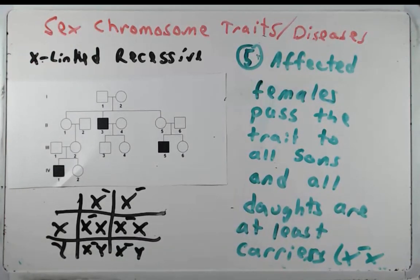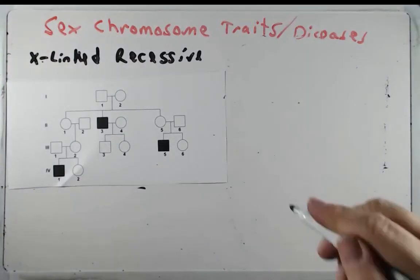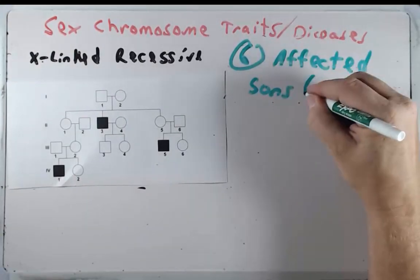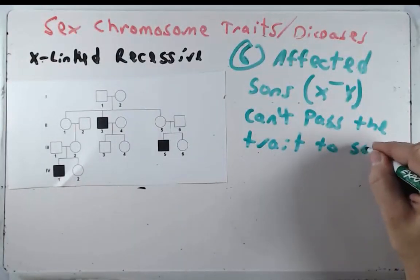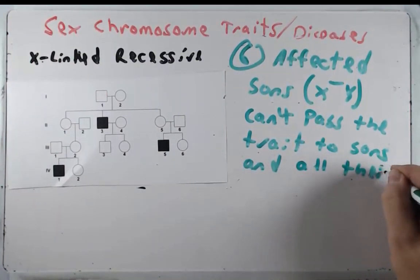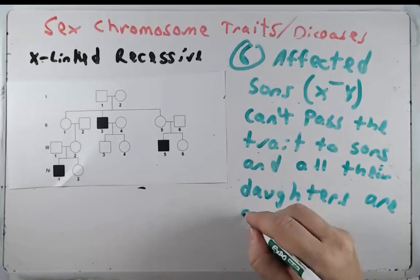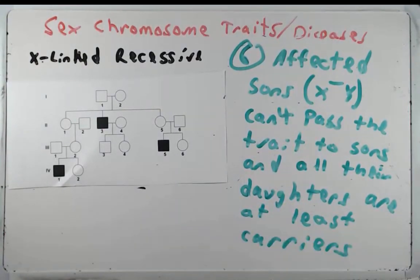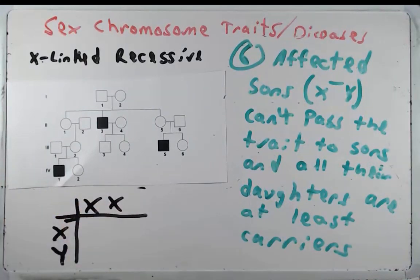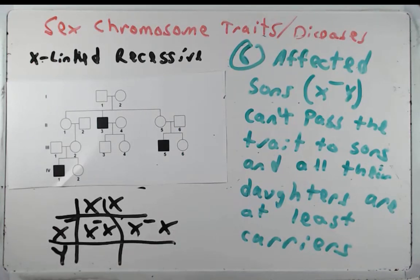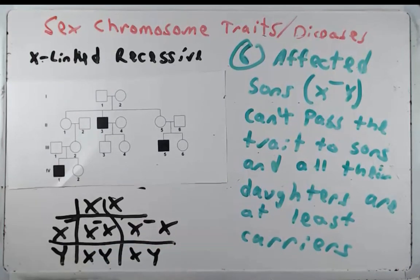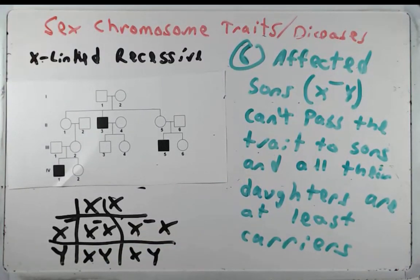Affected sons — that is X-minus Y — cannot pass the trait to sons, and all their daughters are at least carriers. If dad is affected and mom isn't, all their daughters will be carriers because they obtain the mutated X chromosome from dad. However, none of their sons will be affected, as long as mom is not an affected individual or a carrier.